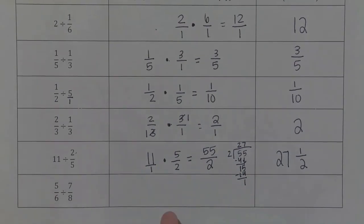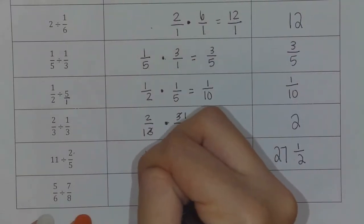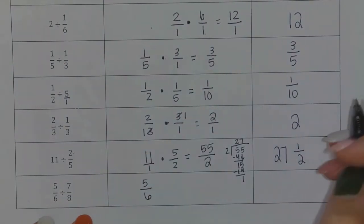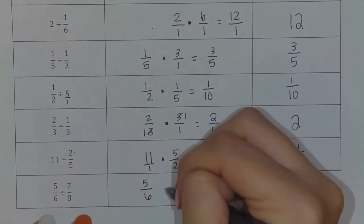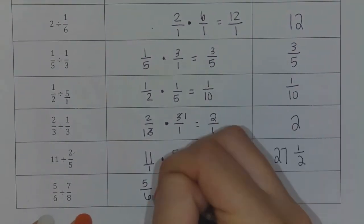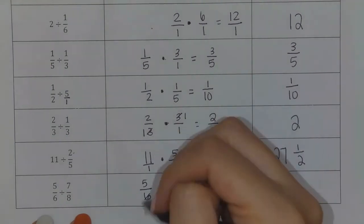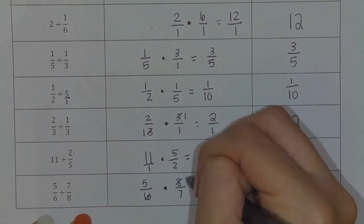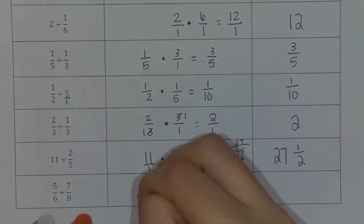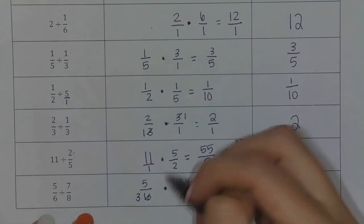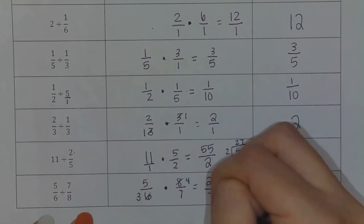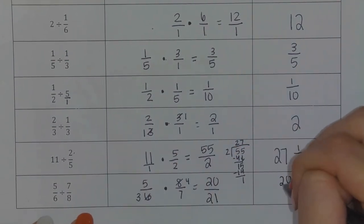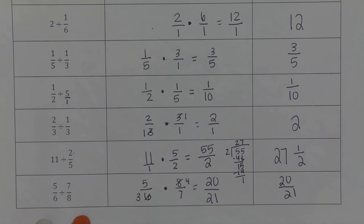Our very last one is five-sixths divided by seven-eighths. I leave the first fraction alone so it stays five-sixths, flip the second fraction to be eight-sevenths, and multiply. I can simplify eight and six — they both have the number two in common, so eight becomes four and six becomes three. Then five times four gives me 20, three times seven gives me 21. I can't simplify, so I get 20 twenty-firsts.